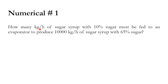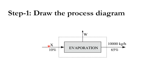Numerical number one: how many kg per hour of sugar syrup with 10% sugar must be fed to an evaporator to produce 10,000 kg per hour of sugar syrup with 65% sugar? In our previous numericals we knew the feed and computed the product, but here we are given the production rate and must find the feed. Looking at the diagram, x is the 10% concentrated feed, water is evaporated, and the product is formed.